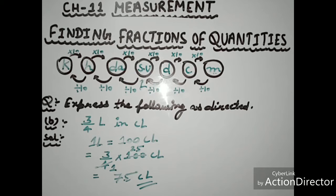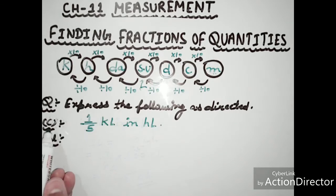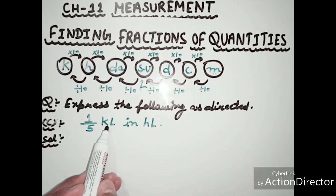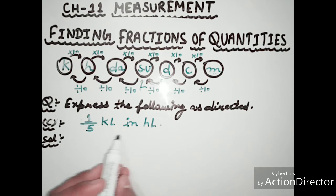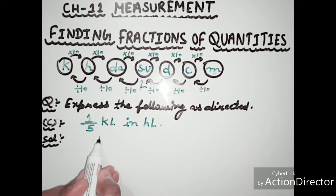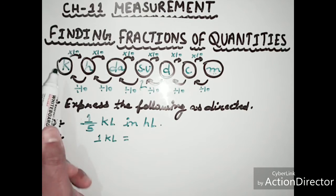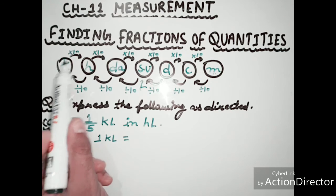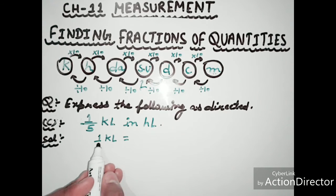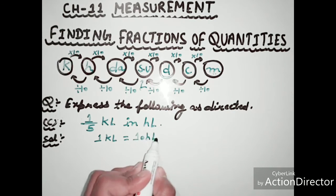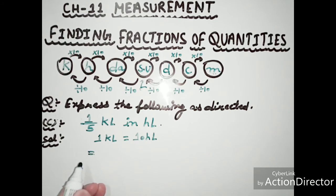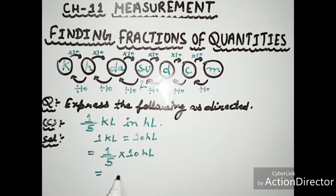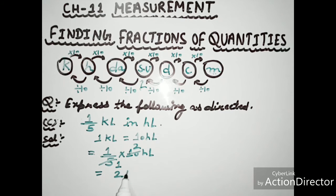Example C: 1/5 kiloliter in hectoliters. Kiloliter is in the table, and we move 1 place to the right, so 1 kiloliter equals 10 hectoliters. We multiply 1/5 by 10. Dividing 10 by 5 gives 2. So 1/5 kiloliter equals 2 hectoliters.